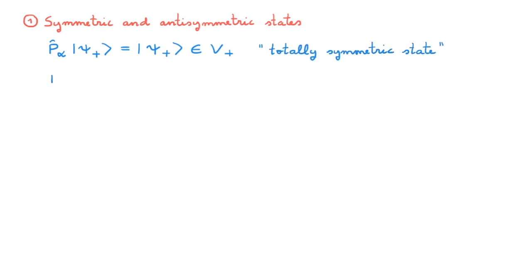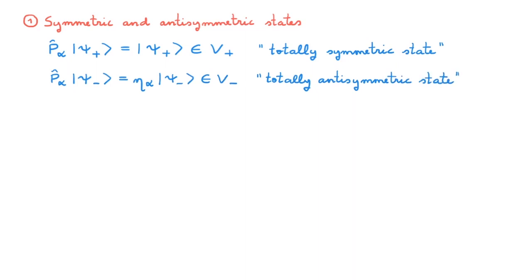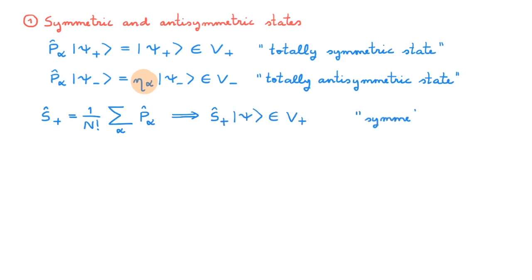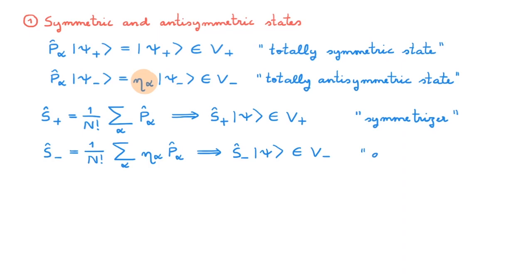Similarly, if we act with any permutation P_alpha on a state psi_minus and we get back eta_alpha psi_minus, then this state belongs to a subspace called V_minus and we say that it is a totally antisymmetric state. In this expression, eta is plus one for even permutations and minus one for odd permutations. We also know that we can construct these totally symmetric or antisymmetric states by applying an appropriate projection operator on an arbitrary state. The first projector is S_plus, defined by one over n factorial multiplying the sum over all n factorial P_alpha running over all permutations. S_plus projects any state psi onto a totally symmetric state and we call it the symmetrizer. The second projector is S_minus, defined by one over n factorial multiplying the sum over eta_alpha P_alpha running over all permutations. S_minus projects any state psi onto a totally antisymmetric state and we call it the antisymmetrizer.